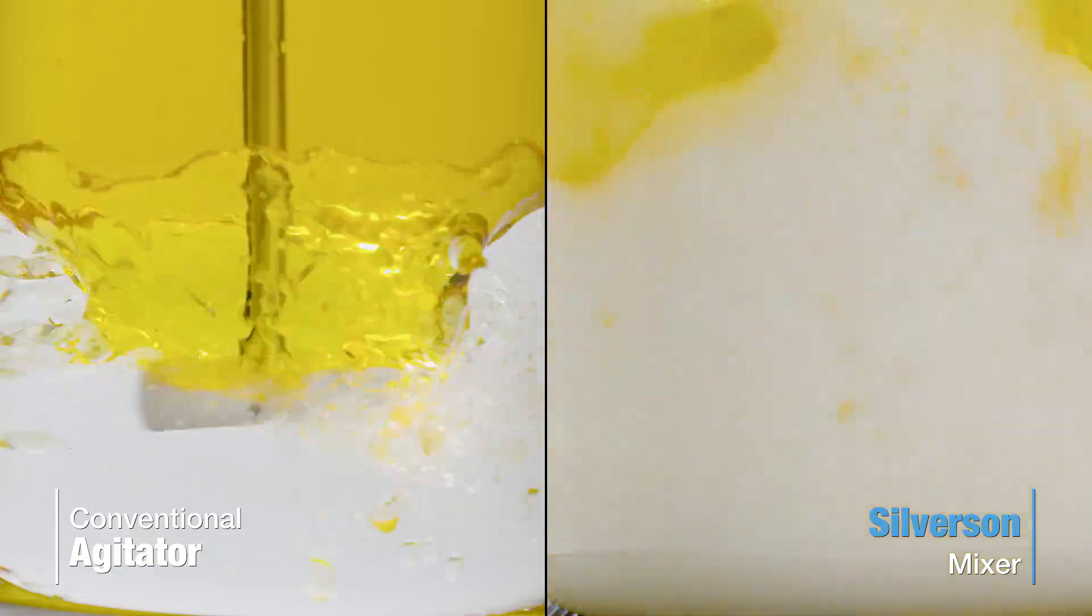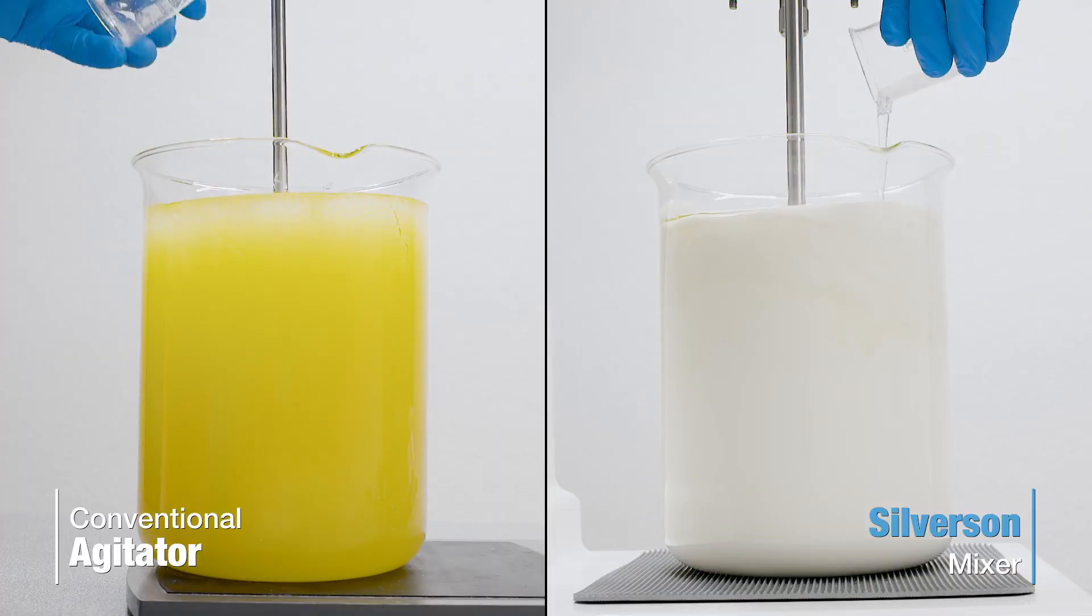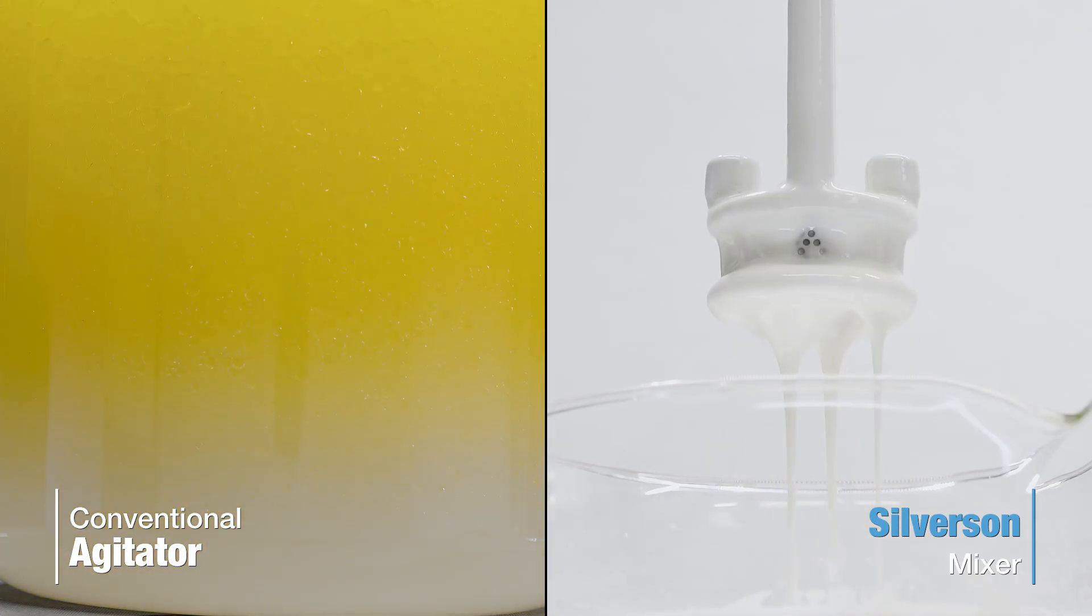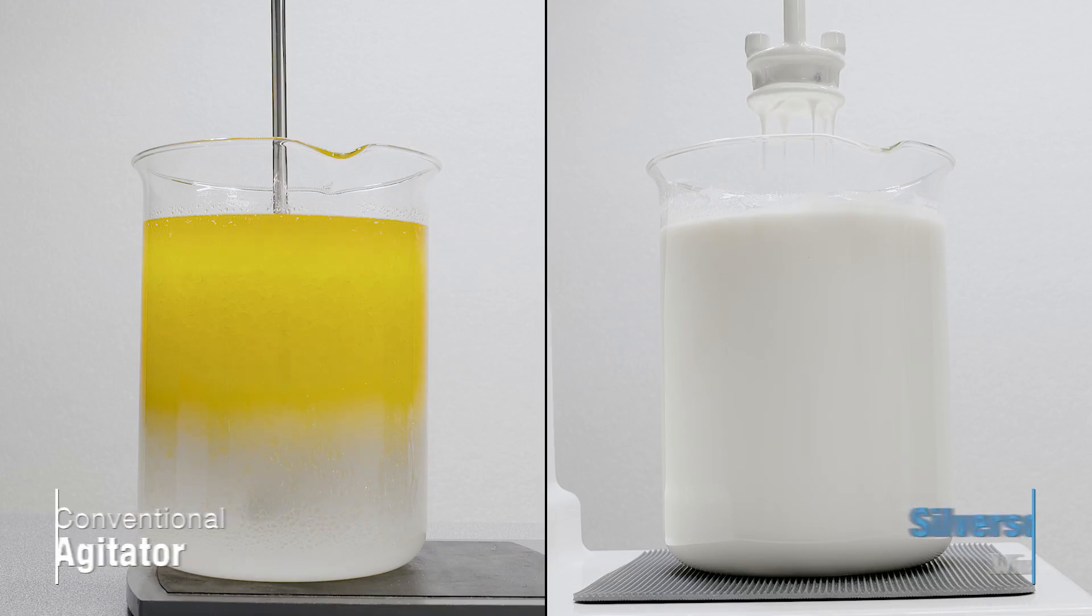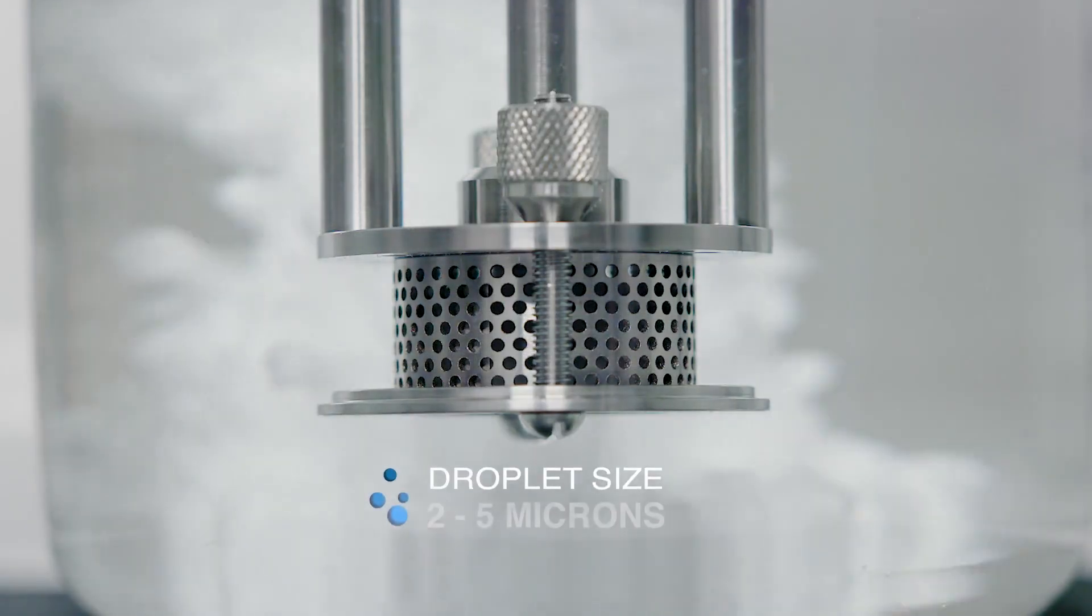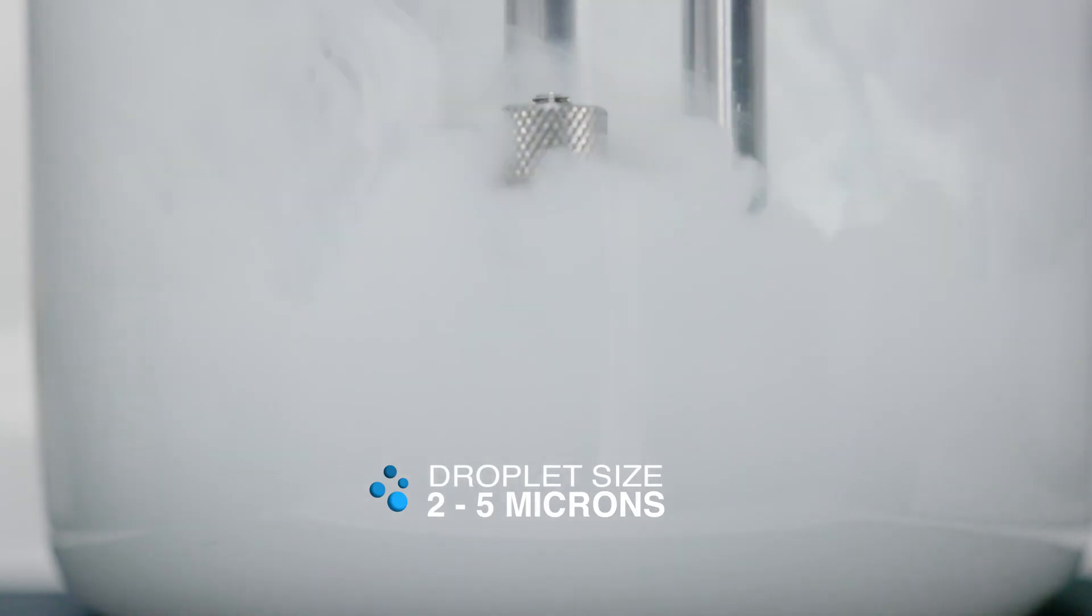It's virtually impossible to form an emulsion with an agitator. Even with an emulsifying agent added, the mixture will separate within seconds of the machine being switched off. A Silverson high-shear mixer can create an almost instantaneous stable emulsion with a typical droplet size of 2 to 5 microns. Finer emulsions down to 0.5 microns can be achieved depending on the formulation.